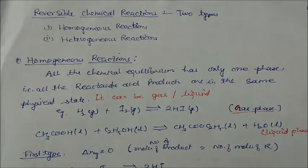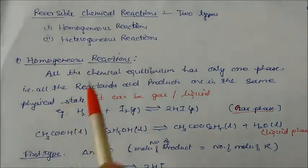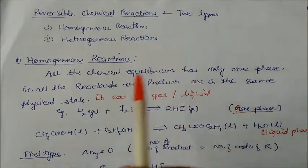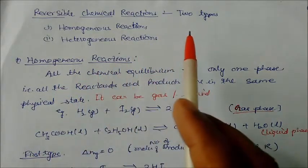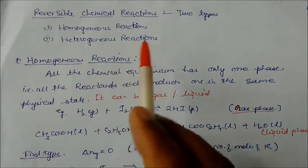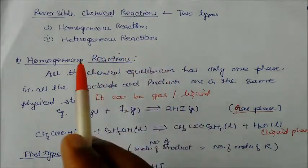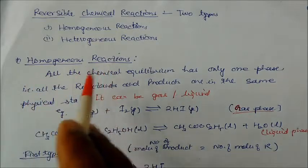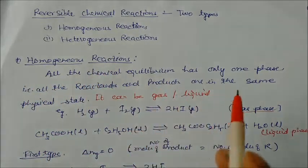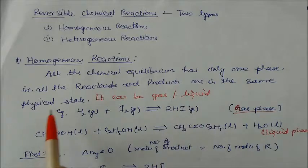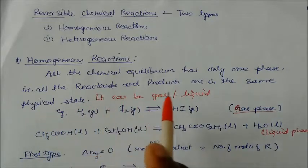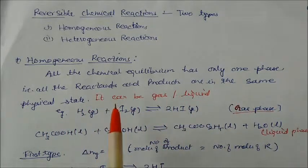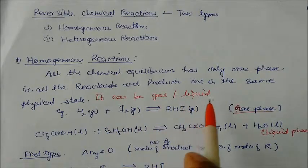Welcome to today's session. In this session we will learn about the different types of reversible chemical reactions. We have two types: one is the homogeneous reaction and second is the heterogeneous reaction. Under the heading of homogeneous reactions, all the chemical equilibria have only one phase — that is, all the reactants and products are in the same physical state. Physical state means we can take a gas or liquid.